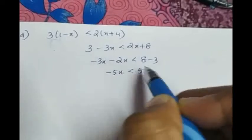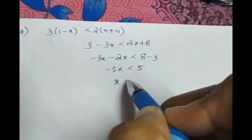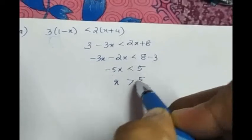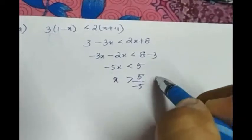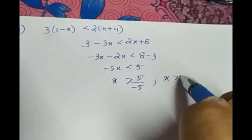So we are getting minus 5x less than 5. We have to take negative 5 to the right side. So what happens to the inequality? It gets reversed, giving you x greater than 5 by minus 5. So what does it imply? x greater than minus 1.